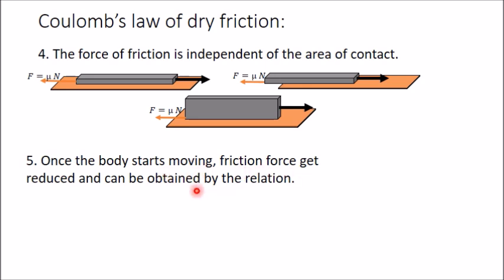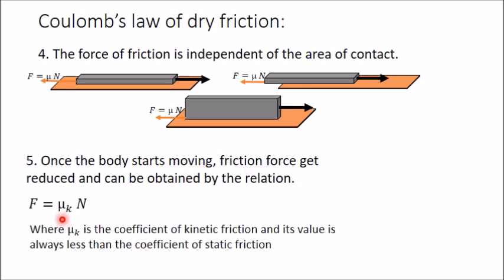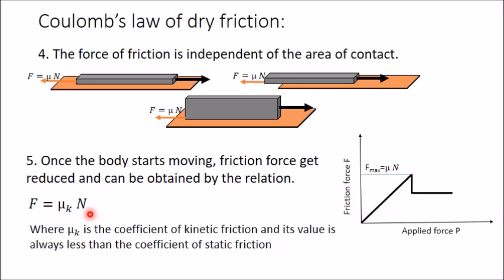The fifth law states that once the body starts moving, the friction force gets reduced and is given by F = mu_k × N, where mu_k is the coefficient of kinetic friction. As seen in the graph, once the applied force exceeds the maximum static friction, friction suddenly drops and becomes constant at this lower kinetic value. The value of mu_k is always less than the coefficient of static friction mu. In the next video, the angle of friction and angle of repose — and the difference between them — will be explained.